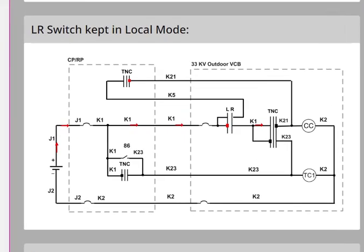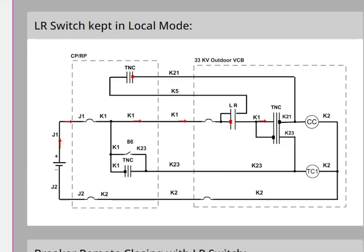Now we will see why we need a local remote switch. Suppose the breaker is under outage and we need to carry some work on it. If one person is working on the breaker and someone closes the breaker remotely from the control room, there might be an accident and he may lose his hand. So if we install a local remote switch and its local contacts are placed in series in the closing circuit, the breaker cannot be closed remotely once the local remote switch is placed on local.